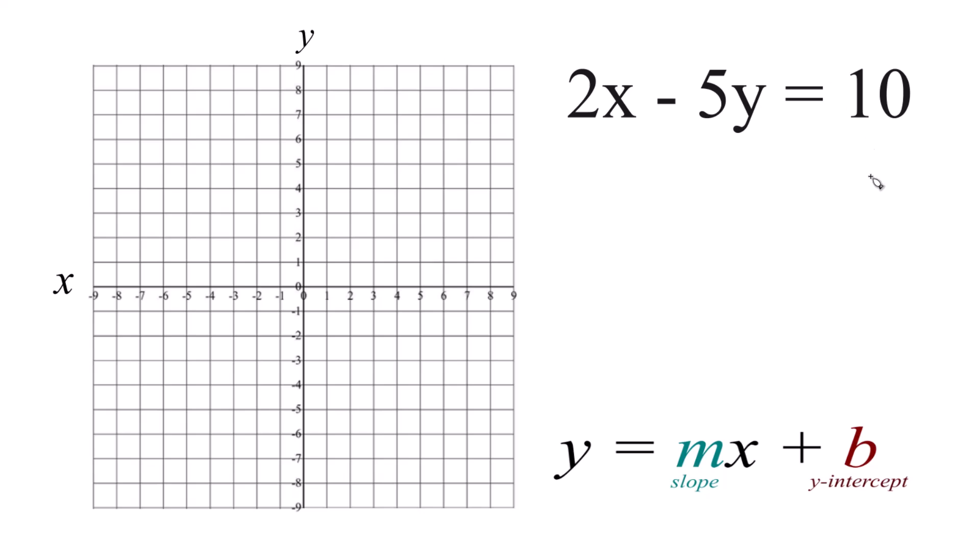So to do that, I need to get the equation here in this form. So I'm going to subtract 2x from both sides. So the x's are gone here, and now we end up with this. And I think I'm going to divide both sides by negative 5. That'll get rid of the 5 over here.